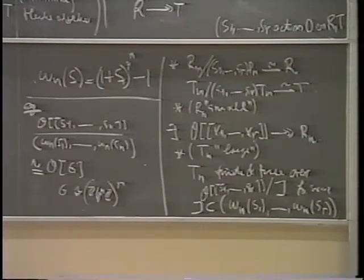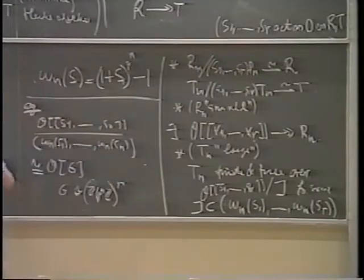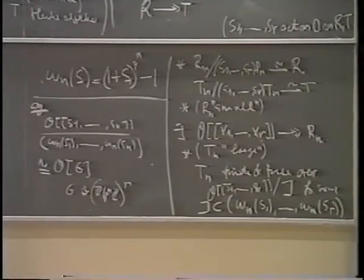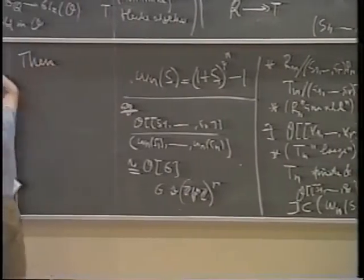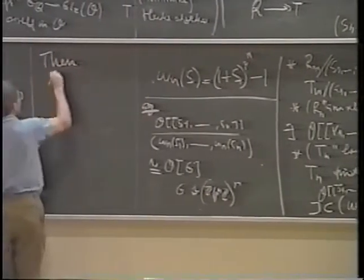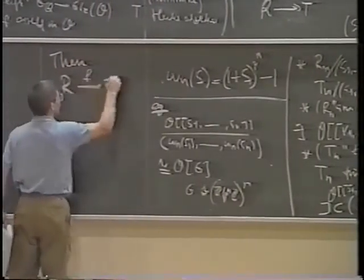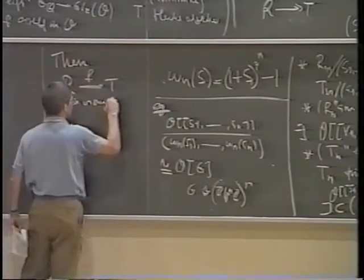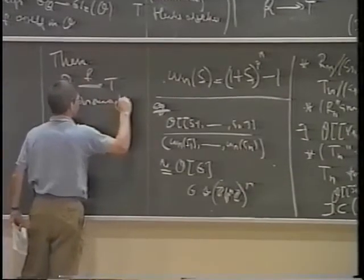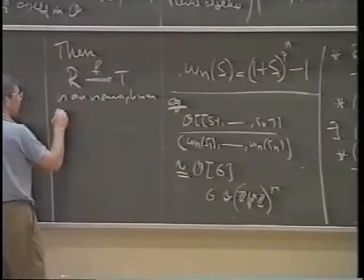We have all these diagrams and all these conditions, and the conclusion is that F is an isomorphism and both these rings are complete intersections.